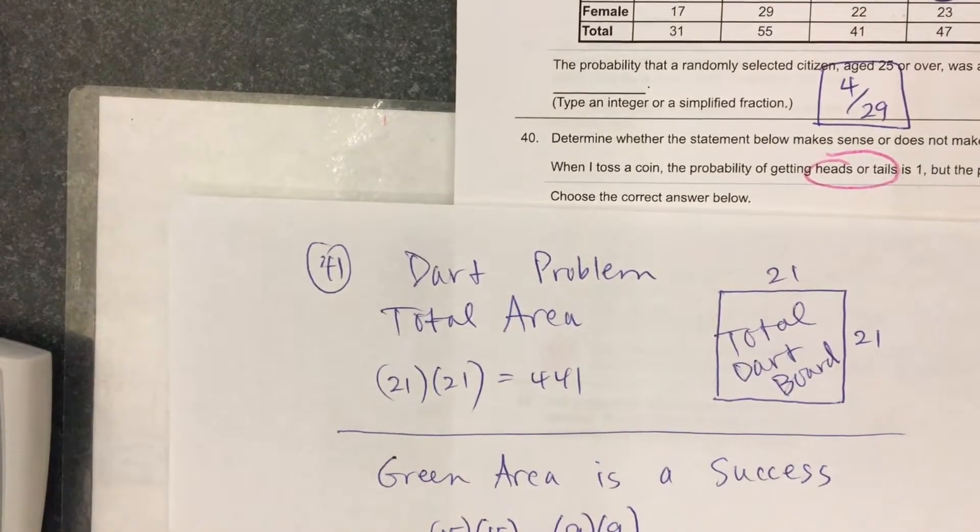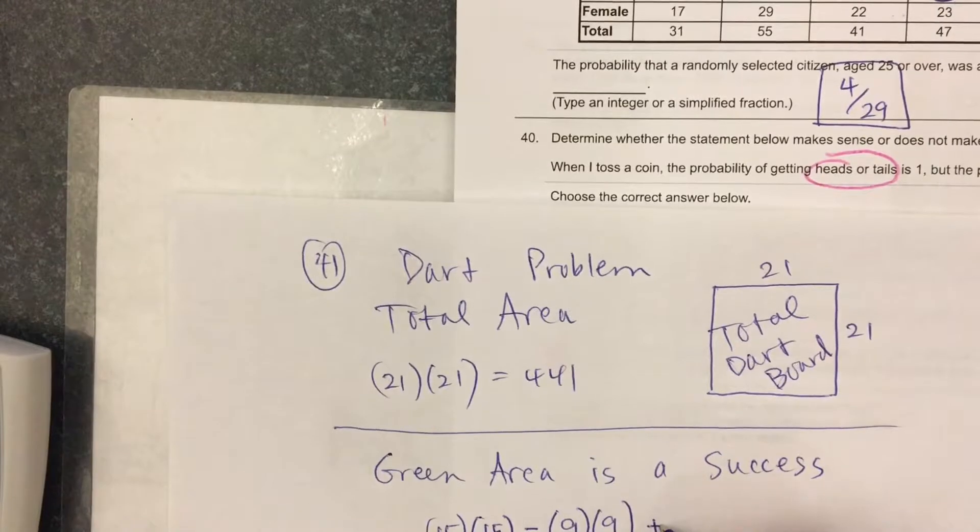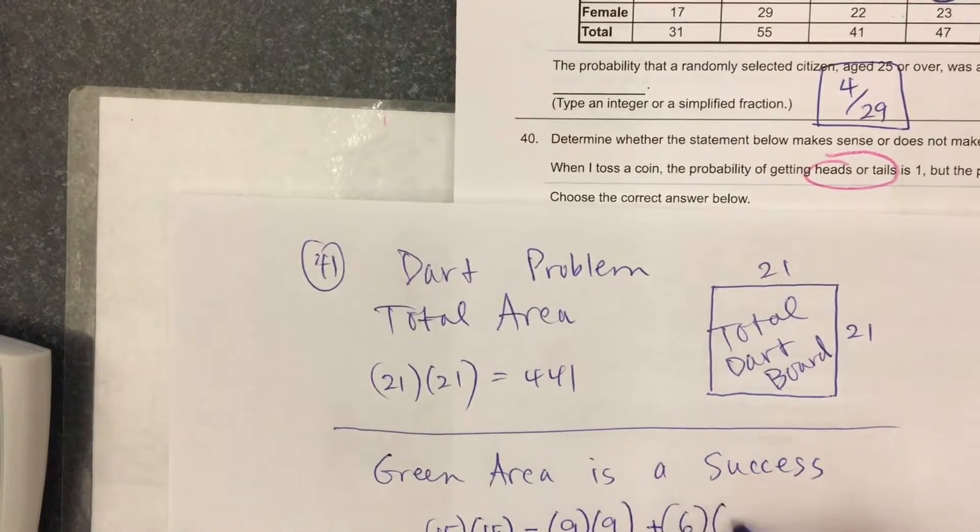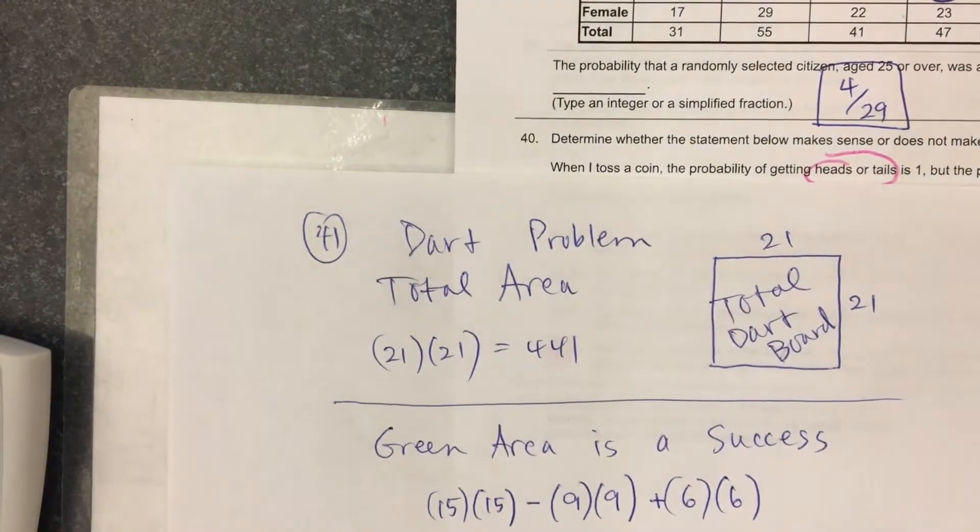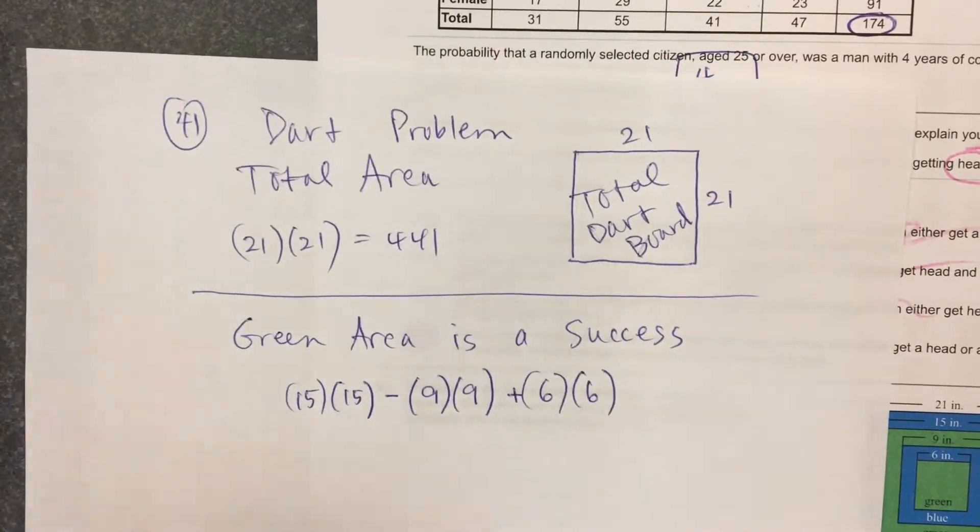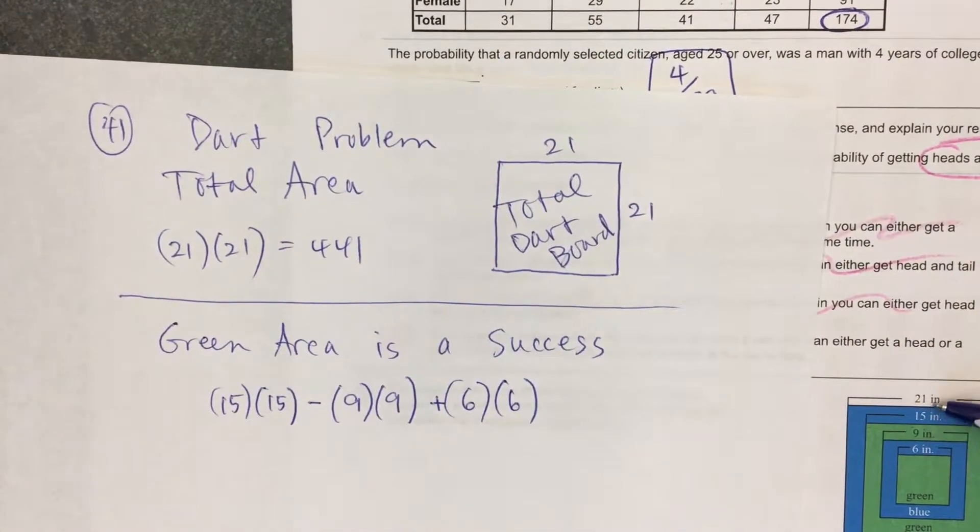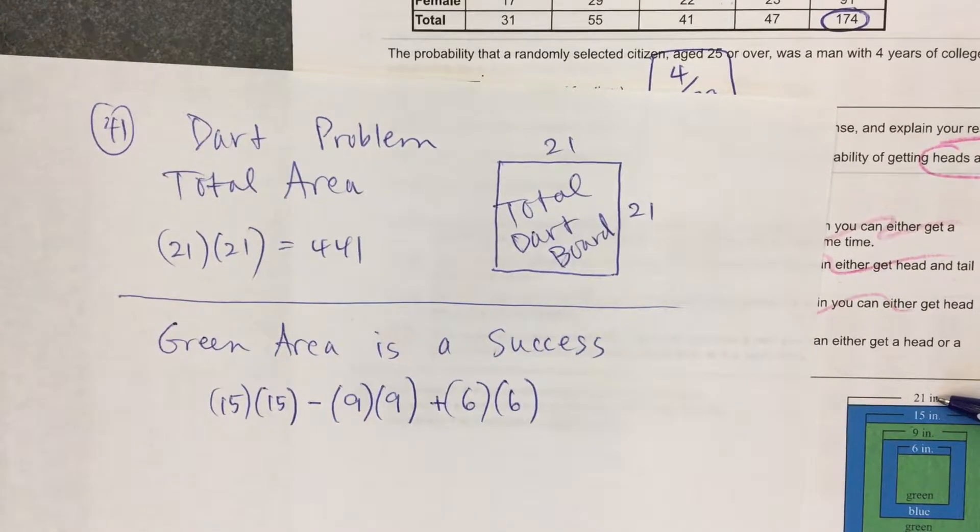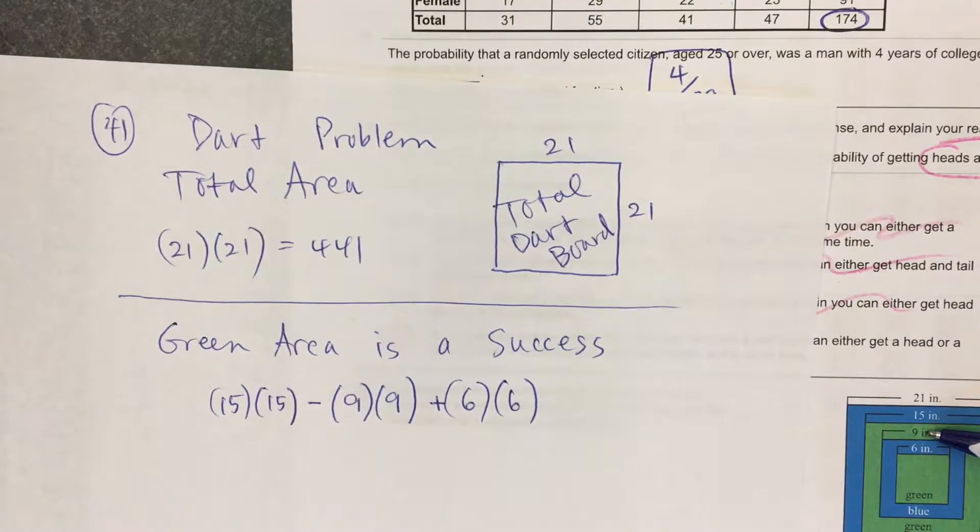And there I'm kind of pretending that the entire thing is blue, but wait a minute, that's not correct either. I have to add back in the green square in the middle, the area. So what you'll do is we look at the problem and we see, okay, 21 times 21, that's the denominator. For the green area, we'll do 15 times 15 minus 9 times 9 plus 6 times 6.